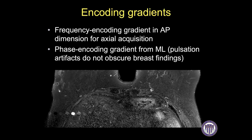In terms of encoding gradients, most artifacts occur in the phase encoding gradient. For a breast MRI with an axial acquisition, it is optimal for the phase encoding gradient to be in the transverse or medial-lateral direction, while the frequency encoding gradient is in the anterior-posterior direction. This prevents the cardiac pulsation artifact from appearing in the AP direction where it could be misinterpreted as a breast mass. I remember P for pulsation artifact in the phase encoding gradient.